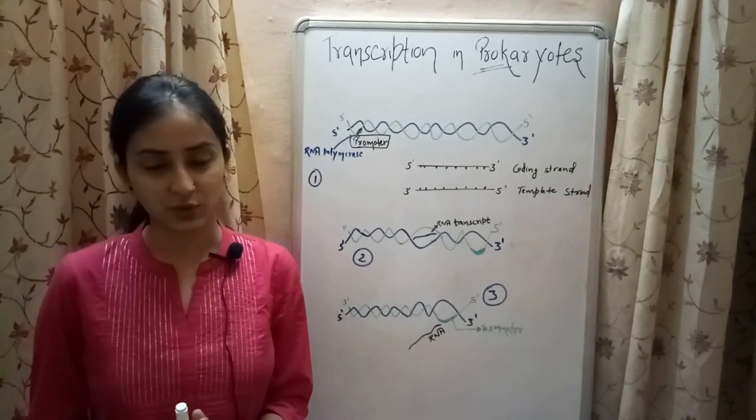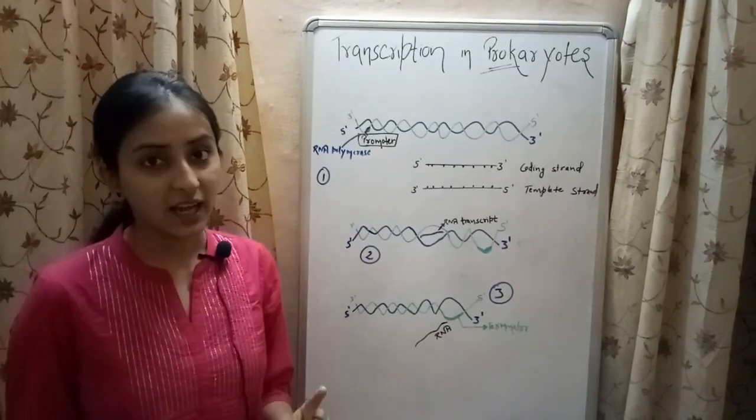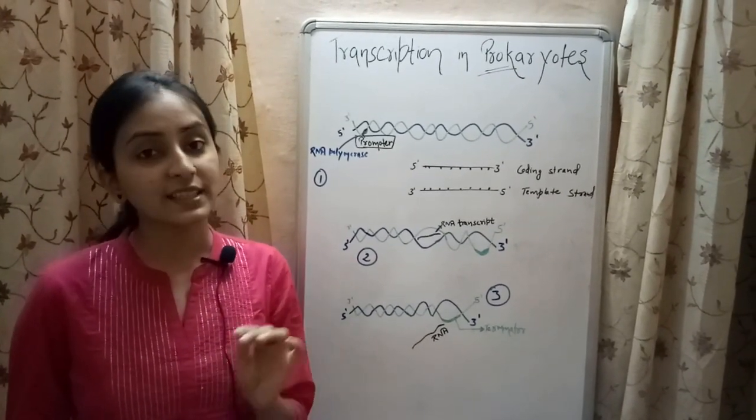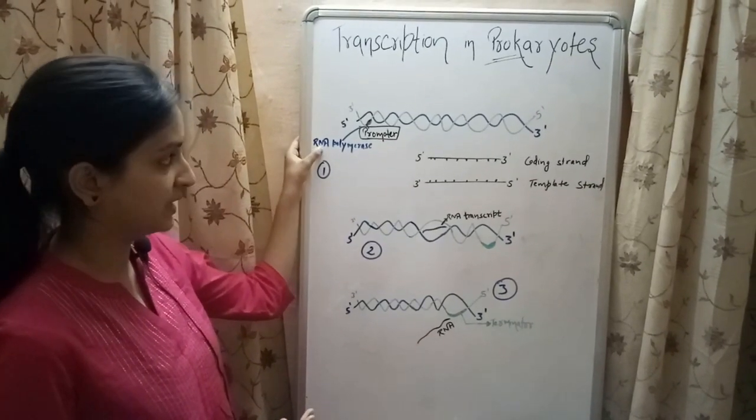In bacteria, there are three types of RNA: mRNA, tRNA, and rRNA, and the transcription of all these three types of RNA is catalyzed by a single RNA polymerase.